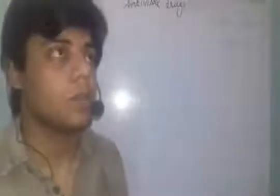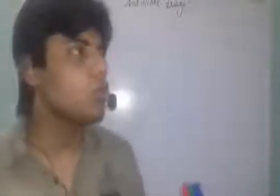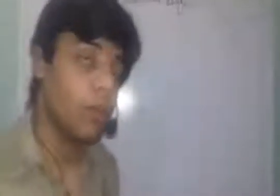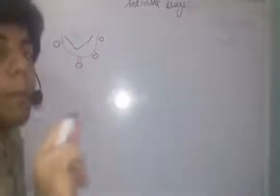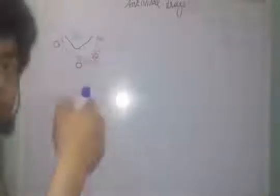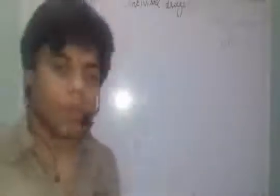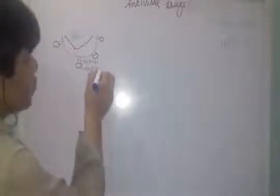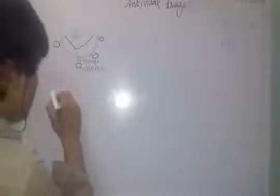One correction I want to make: when I was preparing the topic of the HIV life cycle, I made one mistake. I previously wrote that the blue area is GP140, but actually it is not GP140 — it is GP41. Sorry for that. So the blue area is GP41, and the black area is GP120.